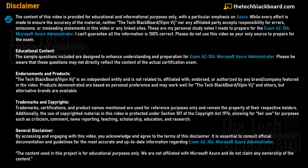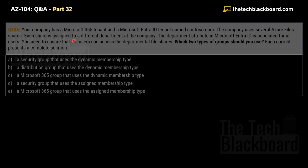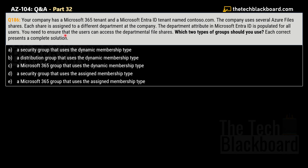Here comes the first question for today — question number 186, part 32. Your company has a Microsoft 365 tenant and a Microsoft Entra ID tenant named contoso.com. The company uses several Azure file shares and each share is assigned to a different department. The department attribute in Microsoft Entra ID is populated for all users, and you need to ensure that users can access the department file shares.